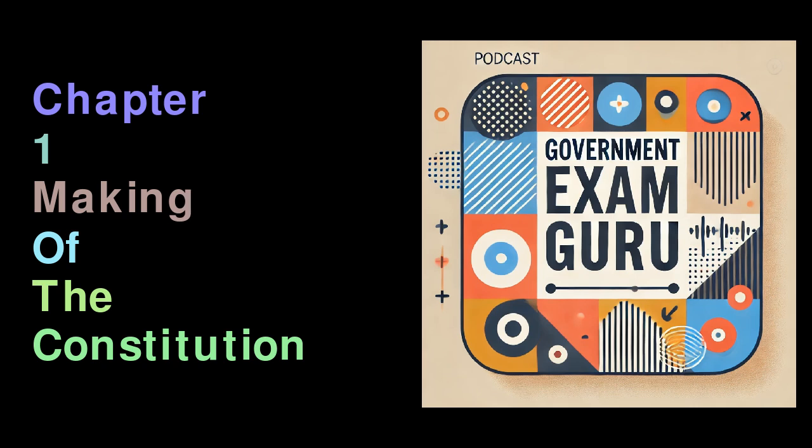Articles within the Constitution, most notably Article 1, identify India as a union of states. Article 14 ensures equality before the law, and Articles 15 and 16 prohibit discrimination and guarantee equality in employment. Safeguards for marginalized communities are outlined in Articles 46 and 330. In summary, the work done by the Constituent Assembly was monumental in shaping India into a democratic and sovereign nation, with its foundational principles continuing to influence the functioning of the Indian state.